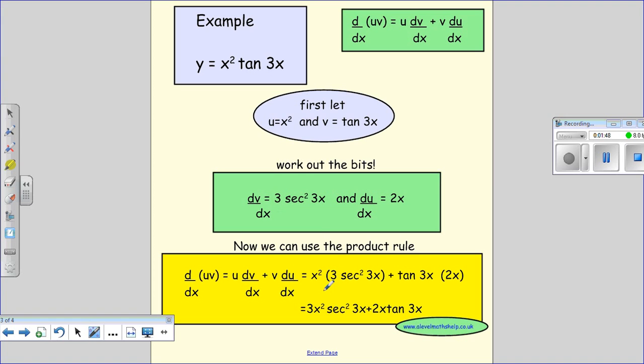Now we just put all the bits together. So we have u·dv/dx = x²·3sec²3x, plus v·du/dx = tan 3x·2x. Put it all together and just do a little bit of sorting out.